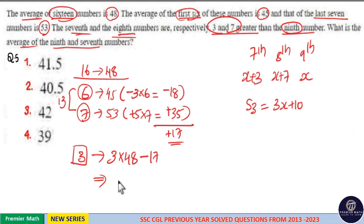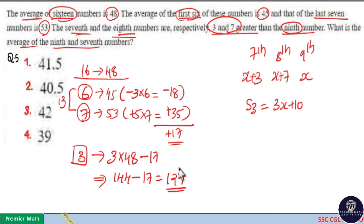3 into 50 is 150, 3 into 2 is 6. So 150 minus 6 is equal to 144. 144 minus 17 means 144 minus 14 is 130, 130 minus 3 is 127. So 127 is the sum of 3 numbers which is equal to 3x plus 10. Then 3x is equal to 117. x is equal to 117 divided by 3 which is 39.